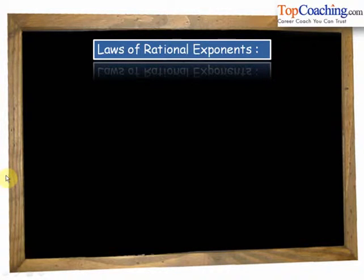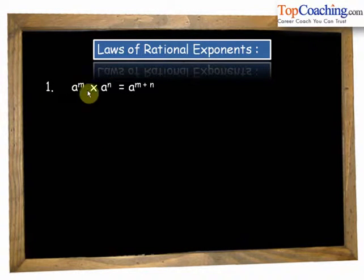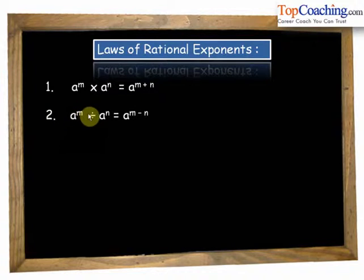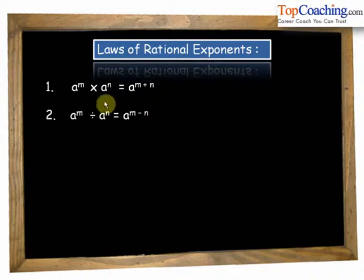Now having seen the laws of integral exponents, it's time to see the laws of rational exponents. The first three are the same: a to the power of m into a to the power of n equals a to the power of m plus n; a to the power of m divided by a to the power of n equals a to the power of m minus n; and a to the power of m whole to the power of n equals a to the power of m into n.